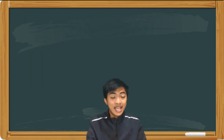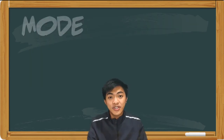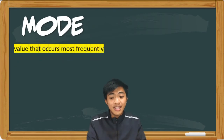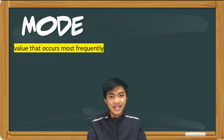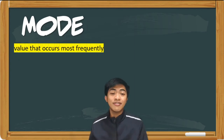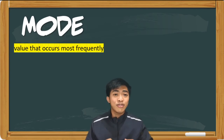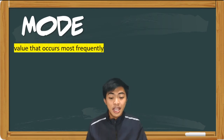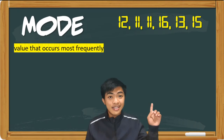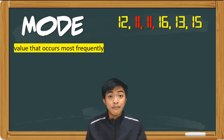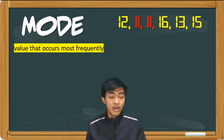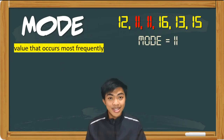Let's proceed to the last measure of central tendency, which is the mode. And mode is the value that occurs most frequently in the dataset. So si mode, wala tayong i-add, wala tayong i-divide. We just have to observe, we just have to inspect the dataset kung ano yung value na mas marami. Dito sa ating dataset, kung titignan ninyo, 11 appeared twice, while the other values appeared only once. So ang mode natin dito is 11.